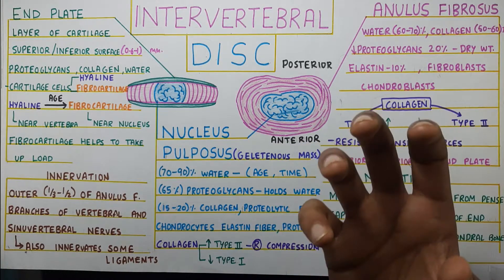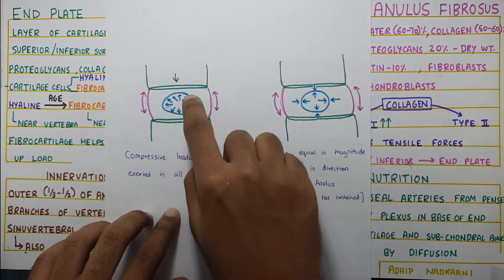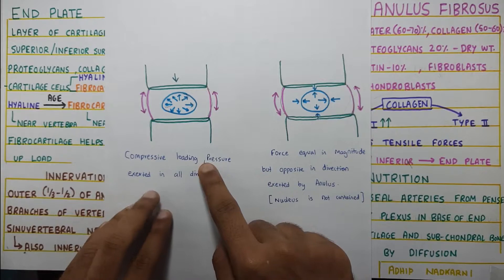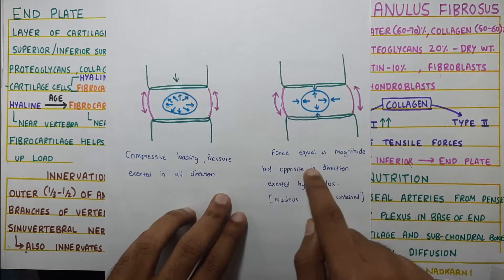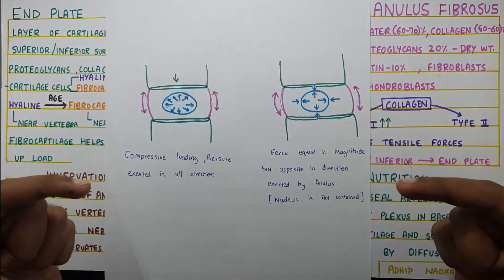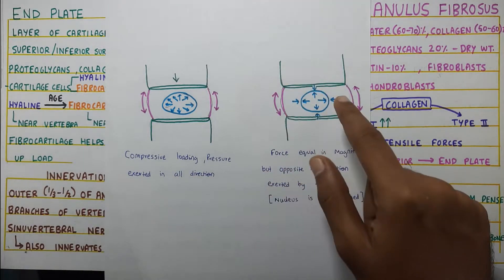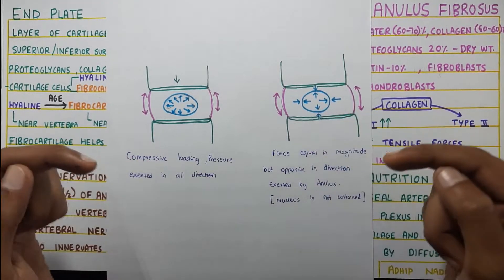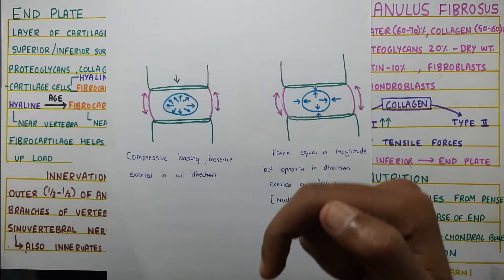Since the nucleus pulposus helps in resisting compressive forces, let's see how. When a compressive force comes from the top, the nucleus pulposus exerts a force outward in all directions. The annulus fibrosus — the outer side part — then exerts a force of equal magnitude but opposite in direction back onto the nucleus pulposus. This creates an equilibrium which helps absorb the forces, balancing both outward and inward forces.